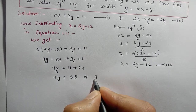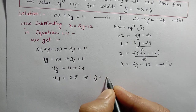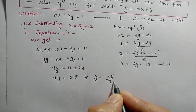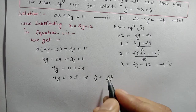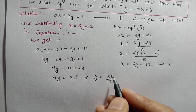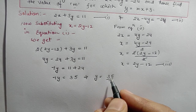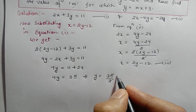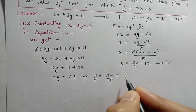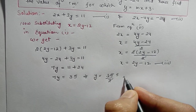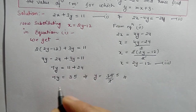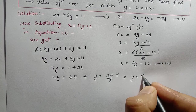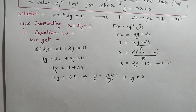So 7y = 35. Dividing both sides by 7: y = 35 ÷ 7 = 5. Therefore y = 5.